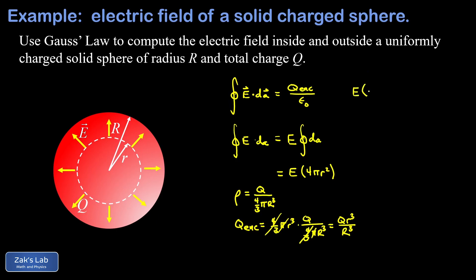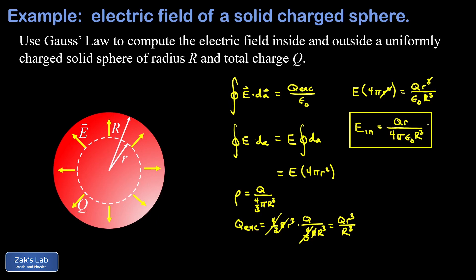Putting it all together: the flux integral gives E times 4πr², and Q_enclosed is Q · r³ / R³, all over ε₀. Two factors of r cancel, and dividing both sides by 4π, we get E_in = Qr / (4πε₀R³), where r is the distance from the center and R is the radius of the sphere.